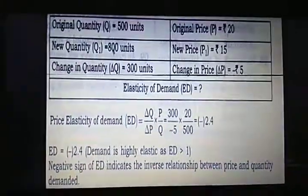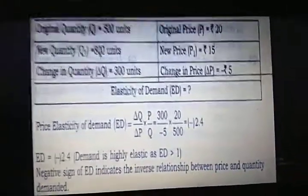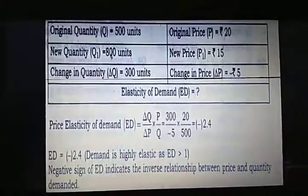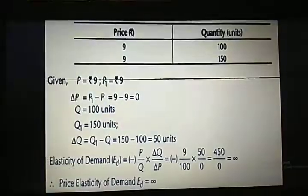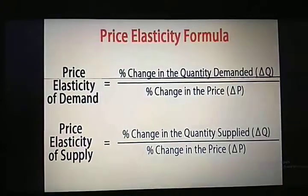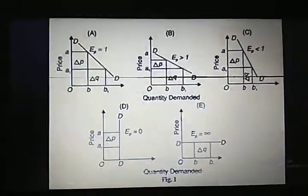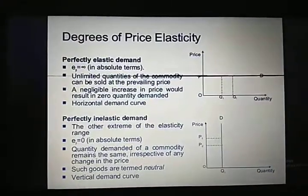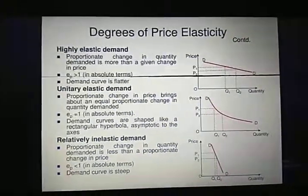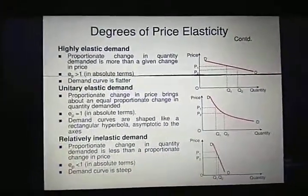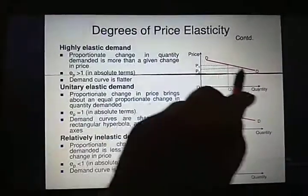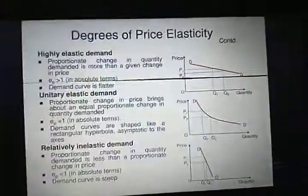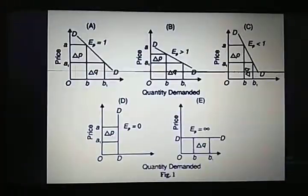So your answer is 2.4. Since elasticity of demand is greater than 1, if asked to represent it with a diagram, the demand curve will be a downward sloping flatter curve.